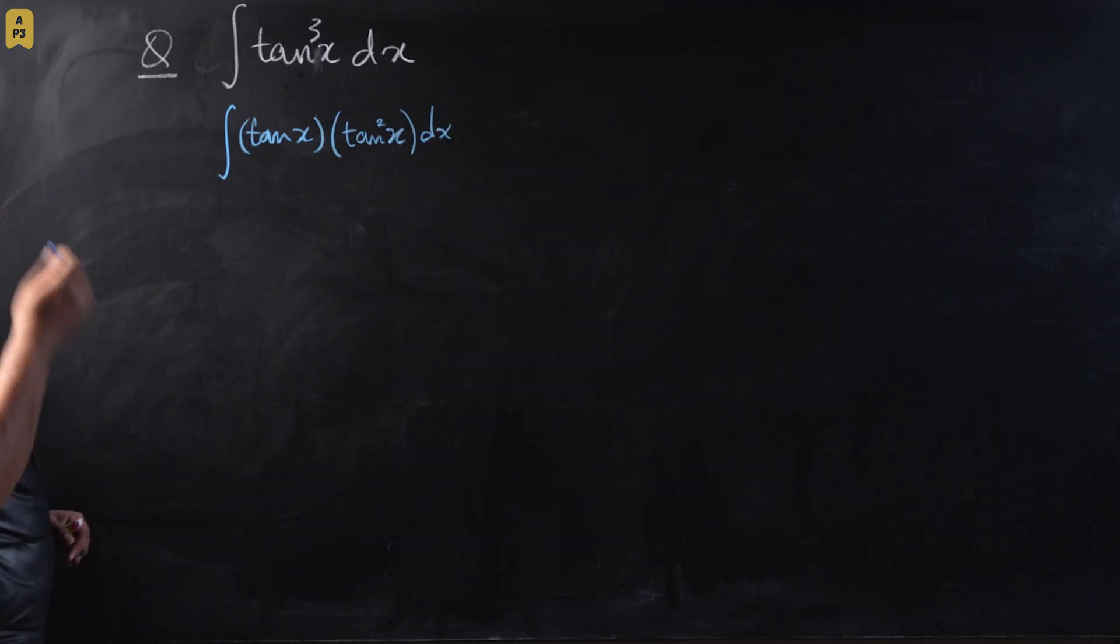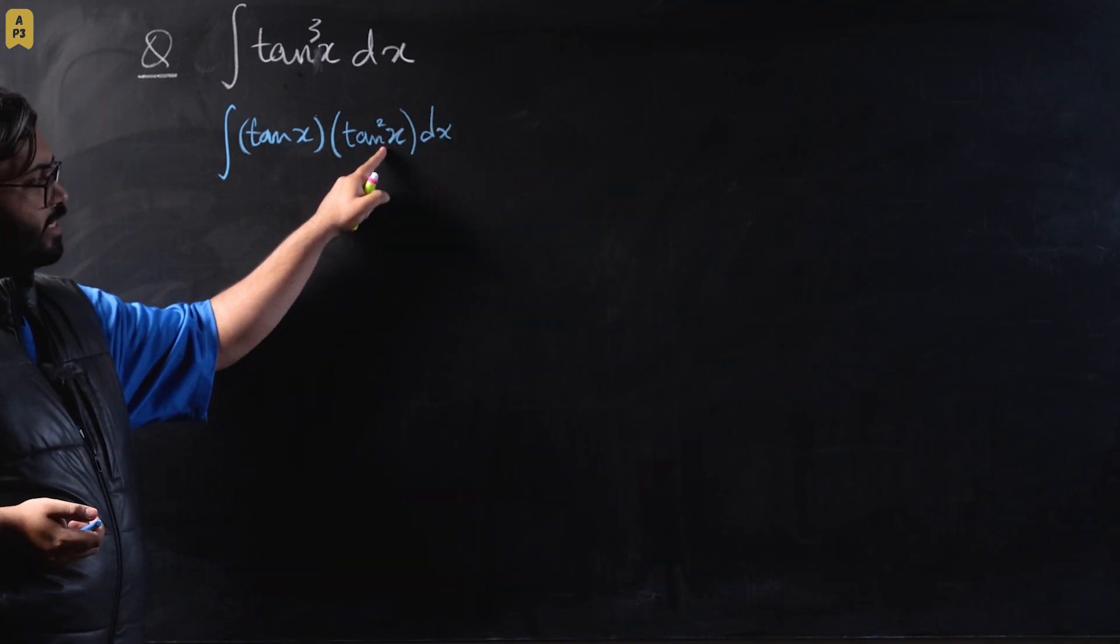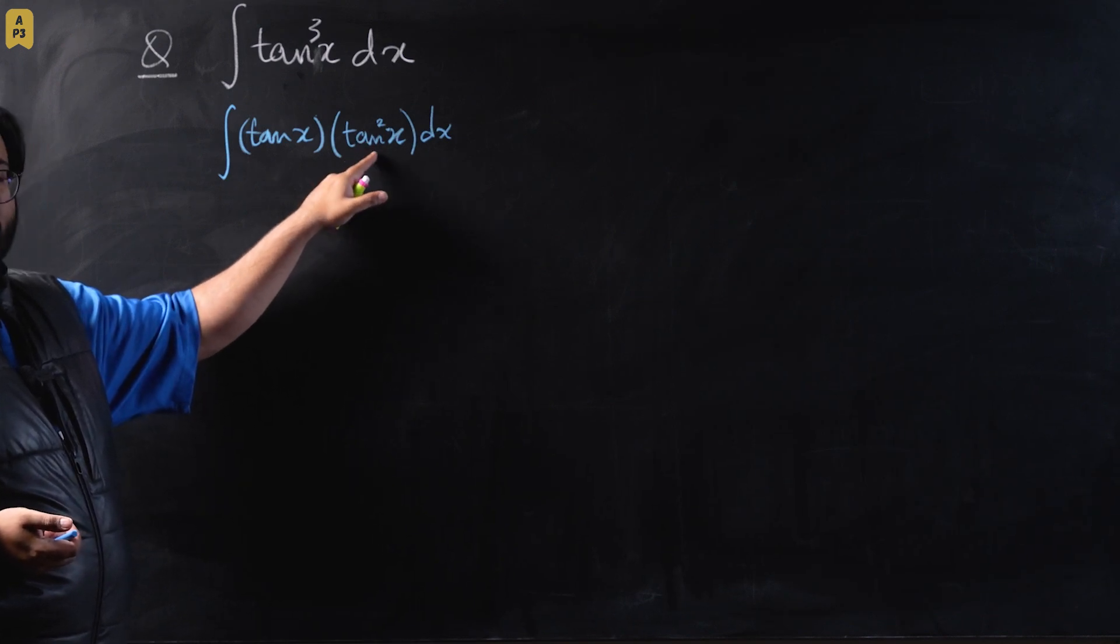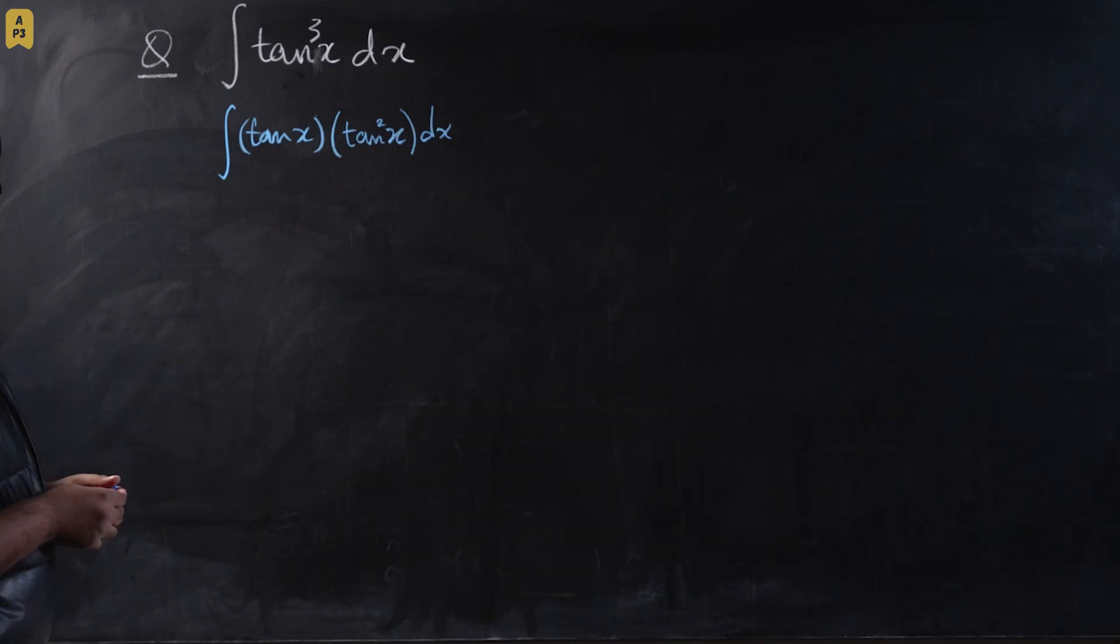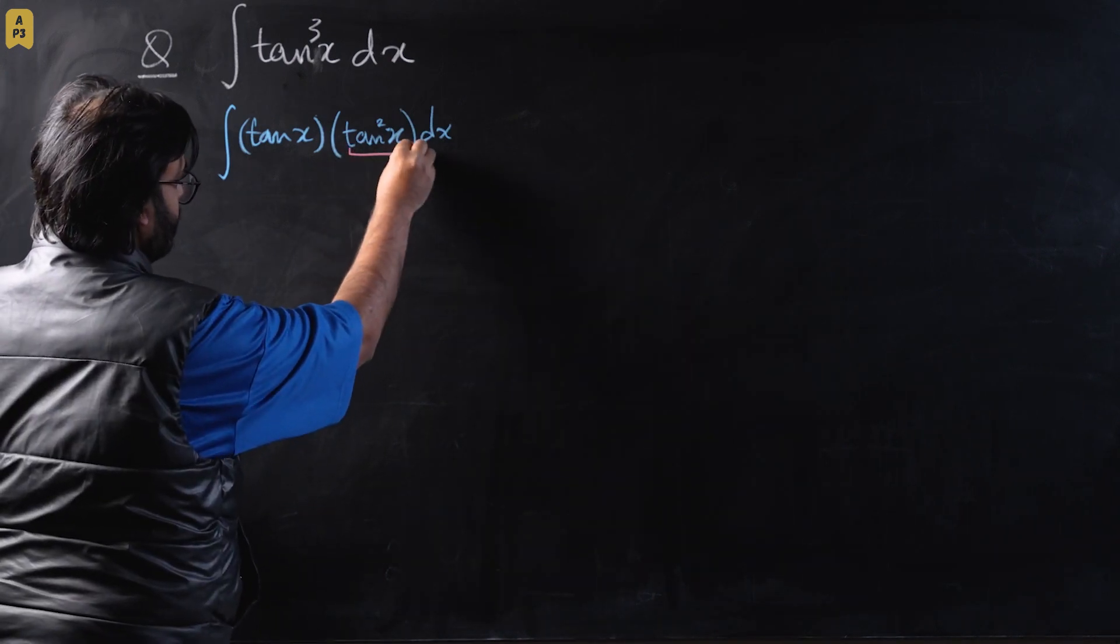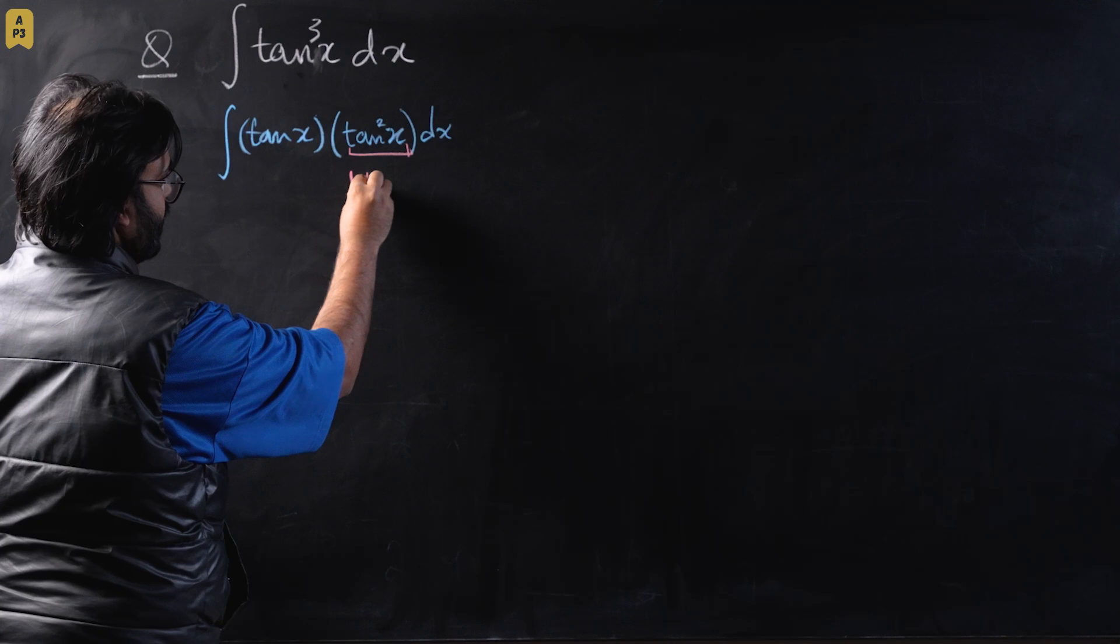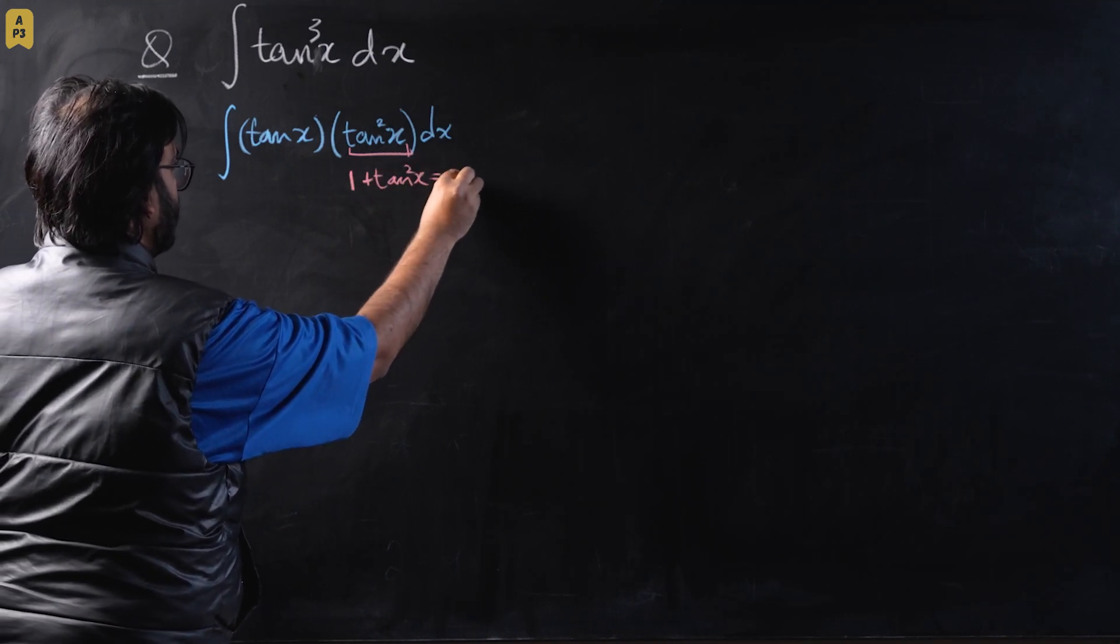We will place the dx over here. Now we know there is a trigonometric identity that says 1 plus tan squared is secant squared x. We can take substitution from there and place it over here. We can replace this with 1 plus tan squared equals secant squared.